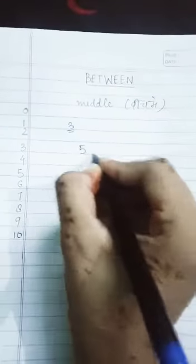Like for example, let us suppose we are having five and seven. And we are asked to find the number between five and seven.